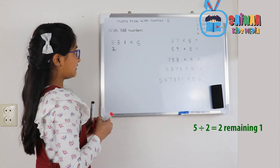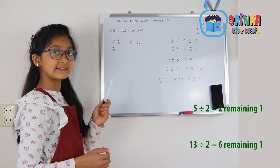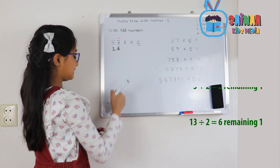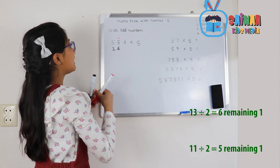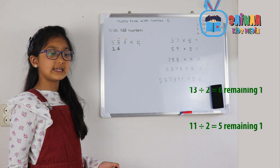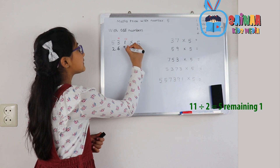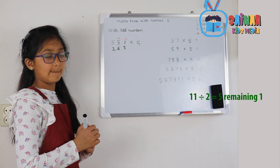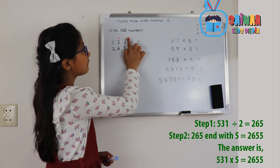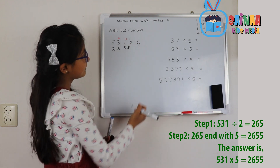That remaining 1 will turn into a 10. 10 plus 3 is 13. 13 divided by 2 is 6, and the remaining 1 turns into a 10 again. 1 plus 10 is 11. We cannot divide 11, so we take its closest number 10. 10 divided by 2 is 5. We have 1 over, but since there are no more numbers, that 1 times 5 is 5. That's the answer.